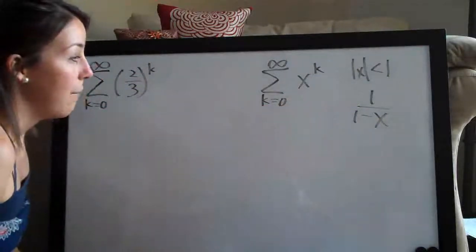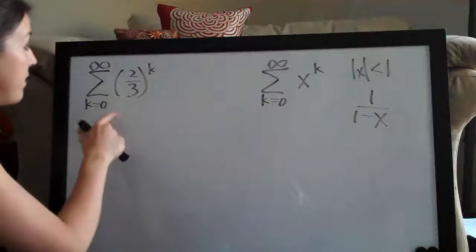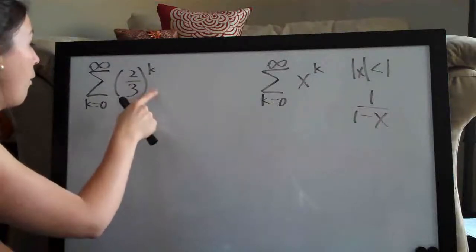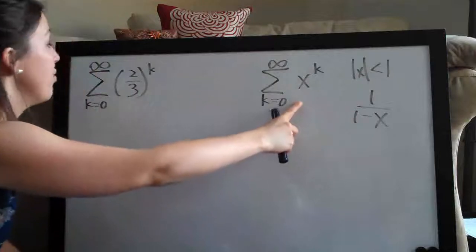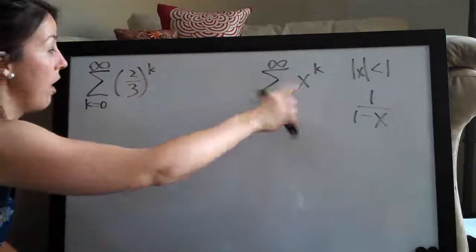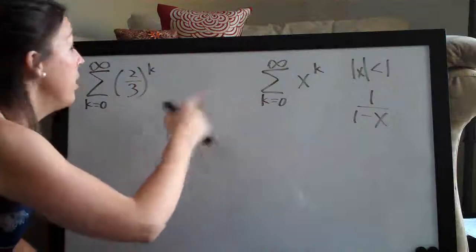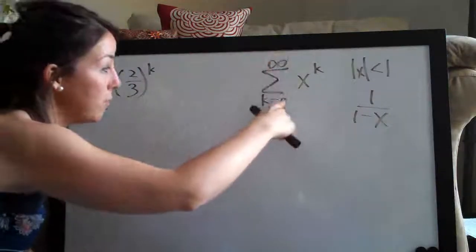So in this case, this formula does apply to us because as you can see, our problem is in the exact same form as this. The only difference is that our x is two-thirds here. So since it's in the same form, we know that this applies.